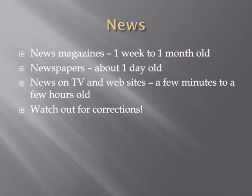News is generally the most current information available through an official outlet. A news magazine has information that was current in the week leading up to the date it was put on the shelves. A newspaper has information that was current as of a few hours before it reaches the readers. News on TV programs and websites may be a few minutes to a few hours old, or even delivered live. The thing to watch out for is that being the first to report on something is very important to news outlets. As a result, errors happen, so you have to watch out for later corrections.